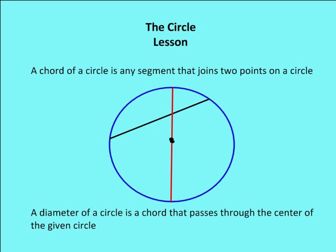A chord of a circle is any segment that joins two points in a circle. I can draw an infinite number of chords, but a chord that runs through the center of the circle is called a diameter. A diameter is a chord, but not all chords are diameters. All diameters, however, are going to be chords. So if asked always, sometimes, never: a chord is a diameter — sometimes; a diameter is a chord — always.